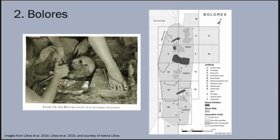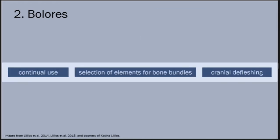Over time, as the tomb was filled with bones and artifacts, it would have grown significantly more difficult to access, and adults would have needed to crouch to enter it. Bioarchaeological evidence attests that funerary treatment and mortuary ritual incorporated a diverse range of practices, including continual use of the same burial space, selective curation or placement of specific kinds of bones, and cut marks indicating post-mortem interaction with human remains.